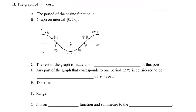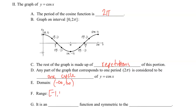Cosine looks similar to sine — it is a wave, a periodic function that repeats its y values — but it does not start at the origin like sine does. It starts at a maximum and finishes at a maximum over at 2 pi, so the period for the parent graph of cosine is also 2 pi. The rest of the graph is made up of repetitions. The domain is negative infinity to infinity, the range is negative 1 to 1, and cosine is an even function because it has symmetry to the y-axis.